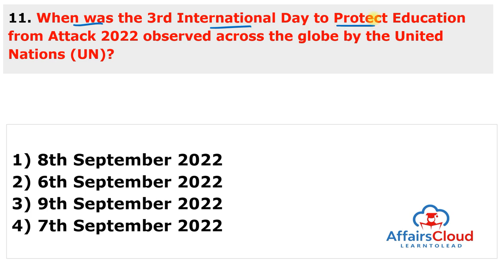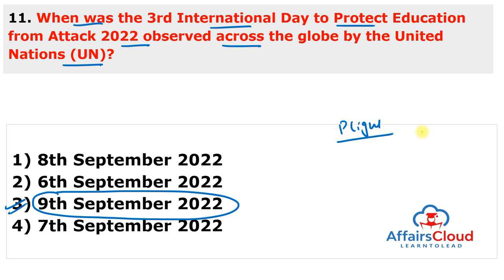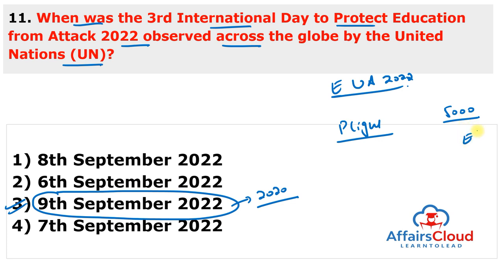The third International Day to Protect Education from Attack 2022 was observed on 9th September 2022 by the United Nations. The day aims to raise awareness about the plight of millions of children living in war-affected countries. The first observance was in 2020. According to the report 'Education Under Attack 2022' by the Global Coalition to Protect Education from Attack, more than 5,000 reported attacks on education and over 9,000 students and educators in at least 85 countries were affected in 2020-21.